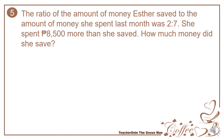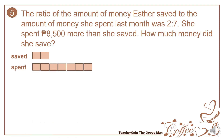Let's have the fifth example. The ratio of the amount of money Esther saved to the amount of money she spent last month was 2 to 7. She spent 8,500 pesos more than she saved. How much money did she save? We will represent save as two parts and spend as seven parts. Take note that I have five more parts for spend than save, and those five parts represent 8,500.